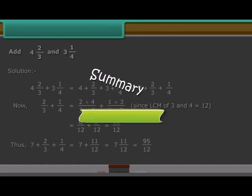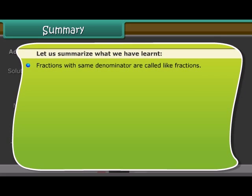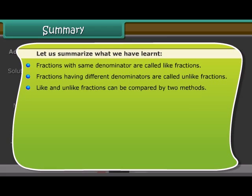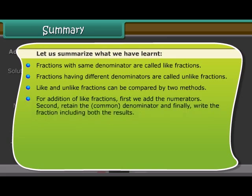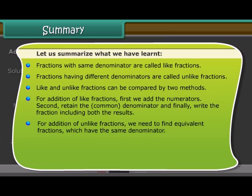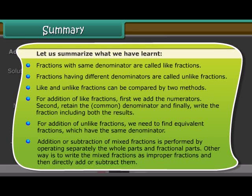Summary: Fractions with the same denominator are called like fractions; fractions with different denominators are called unlike fractions. Like and unlike fractions can be compared by two methods. For addition of like fractions, add the numerators and retain the common denominator. For addition of unlike fractions, find equivalent fractions with the same denominator. Mixed fractions can be added or subtracted by operating separately on whole and fractional parts, or by converting to improper fractions first.